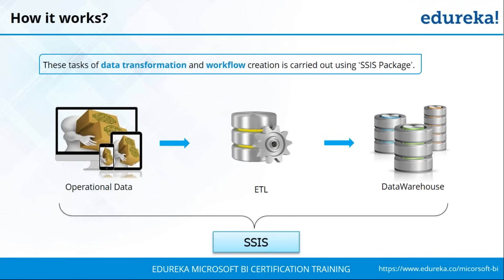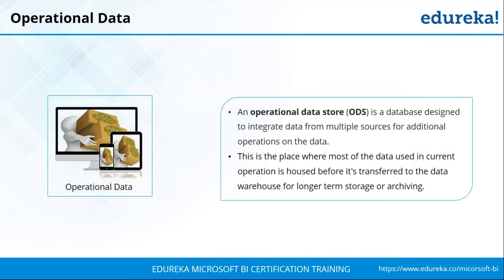SSIS consists of three major components. The first is operational data, followed by the ETL process, and then the data warehouse. An operational data store, or ODS, is a database used to integrate data from multiple sources. Unlike a master data store, data in an ODS may be passed for further operations and the data warehouse for reporting, but it is not passed back to the operational system.